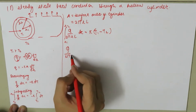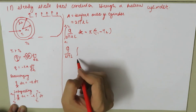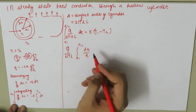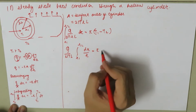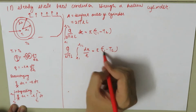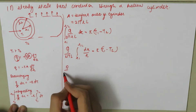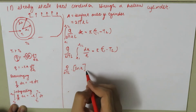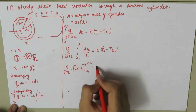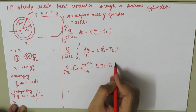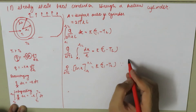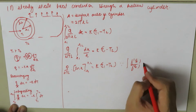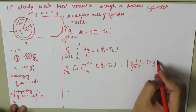Since Q and 2πL are constants, we integrate dr/r from R1 to R2, which equals K times (T1 minus T2). So Q/(2πL) times ln(r) evaluated from R1 to R2 equals K(T1 minus T2), using the identity that the integral of f'(x)/f(x) equals ln(f(x)).